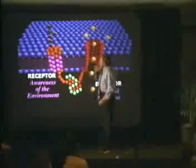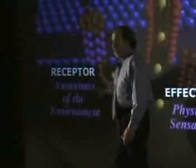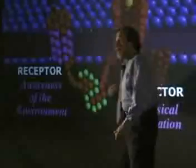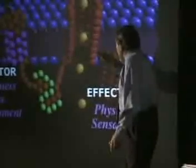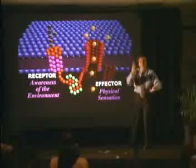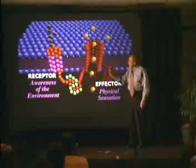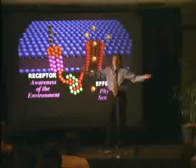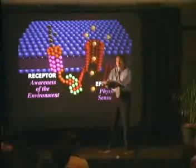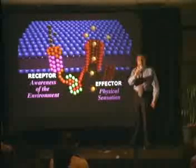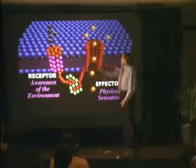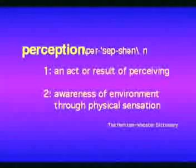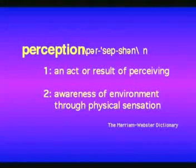The function of the receptor is awareness of the environment — it sees. But I have to convert that signal into a biological action. So the function of the output, the effector, is to create a physical sensation or response to that signal. It controls a typical behavior in response to the signal. It represents awareness of the environment through physical sensation. So what is this controlled unit actually called? Perception.